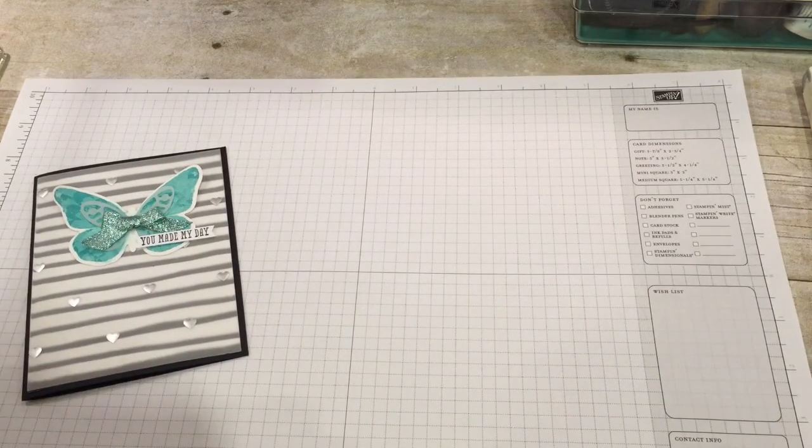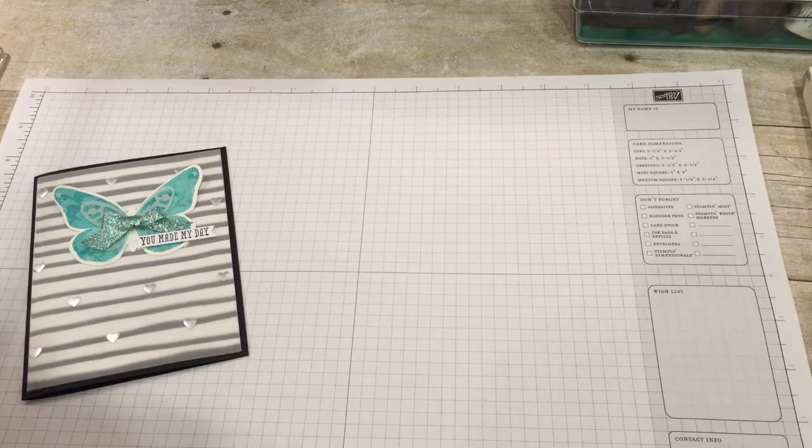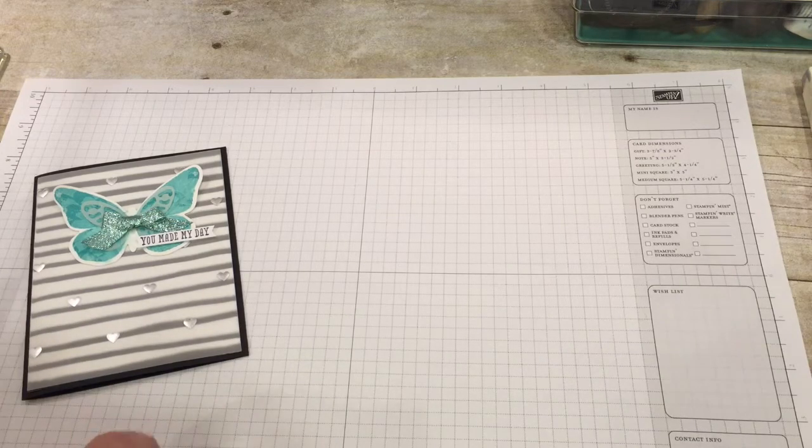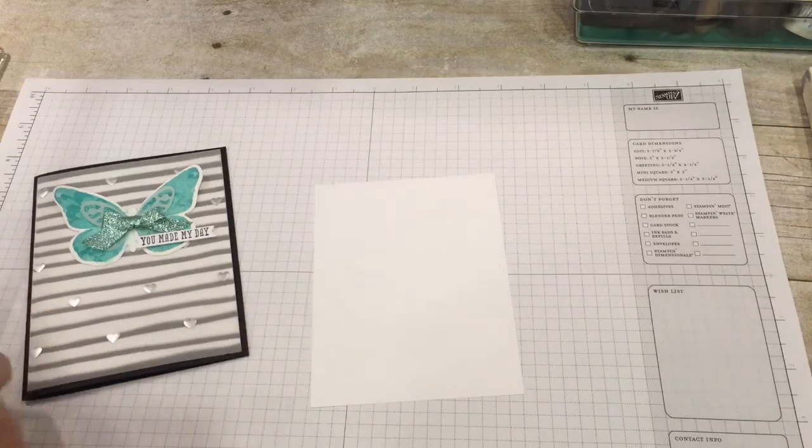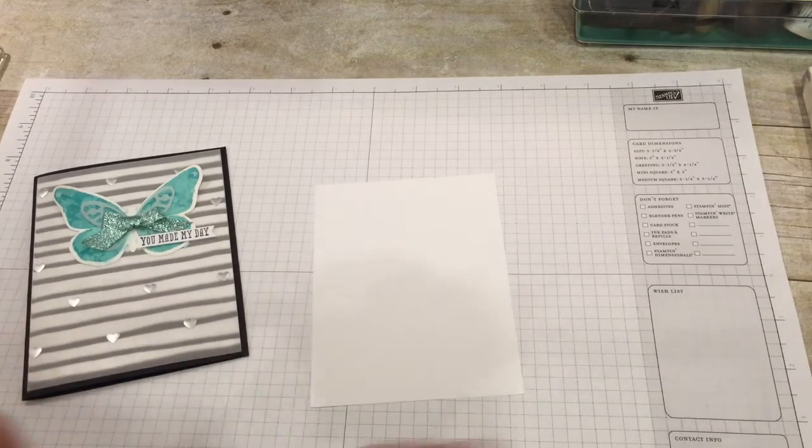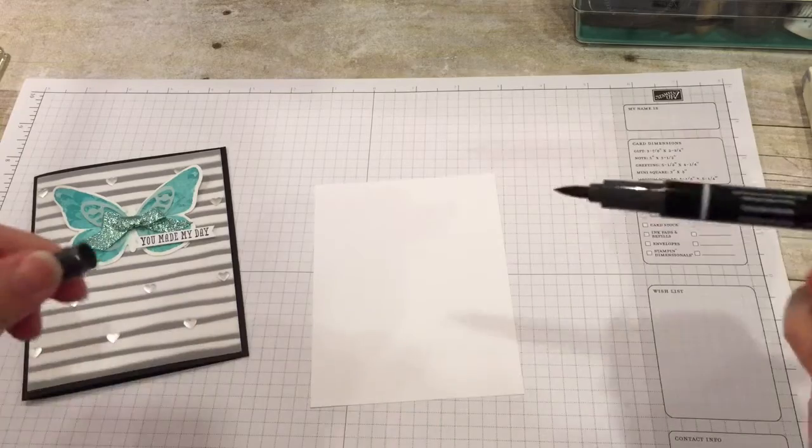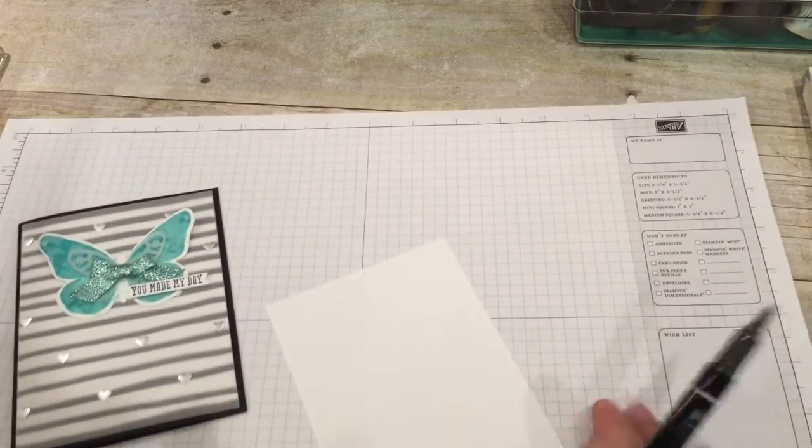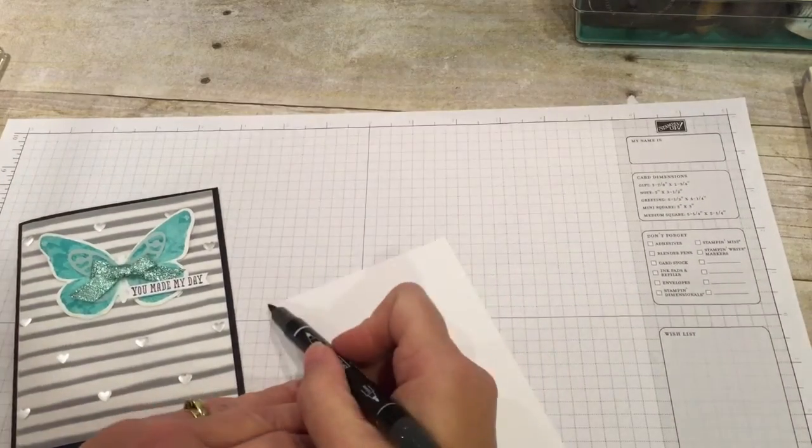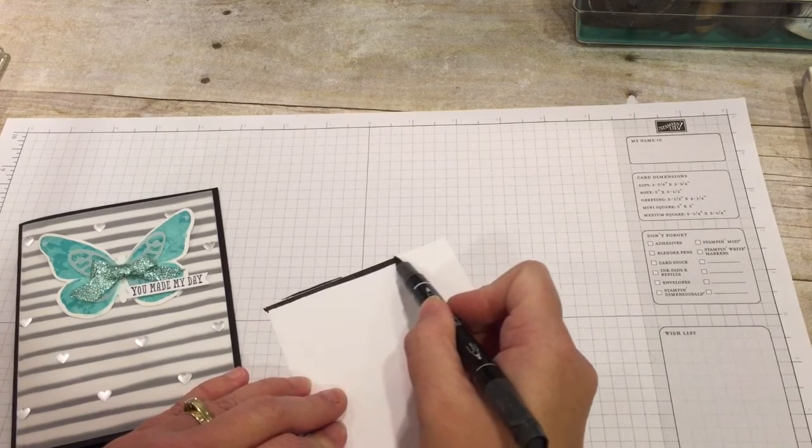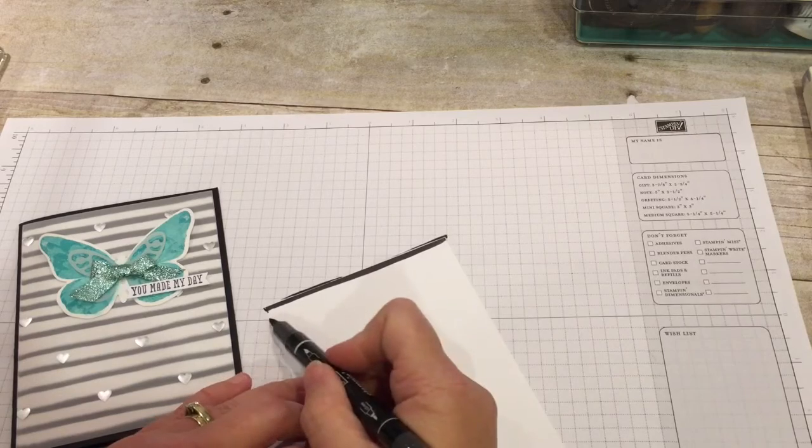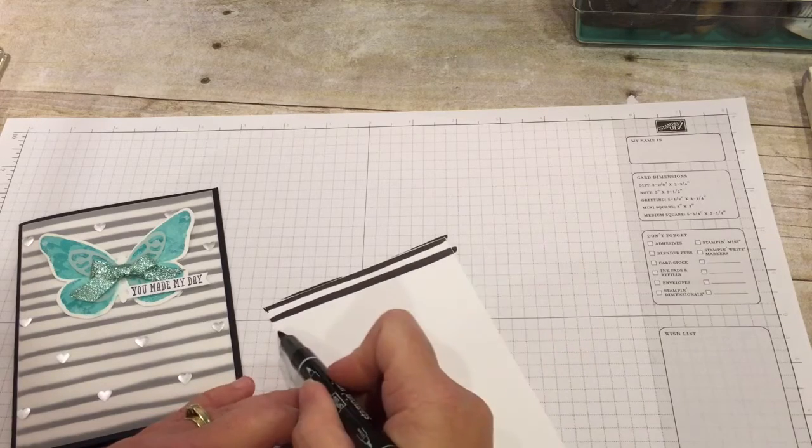And what I need to start with is a piece of cardstock and a black marker. So I have my four by five and a quarter inch piece of cardstock and one black Stampin' Write marker. And what I'm going to do is simply draw lines across here. And before you all get started telling me how you can't draw straight lines, I don't want to hear it. You can do it. It's not that hard. And the best part is they don't have to be perfect.